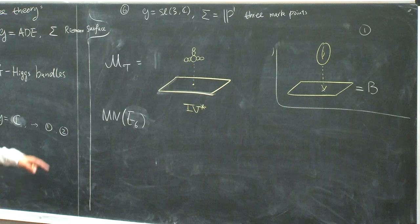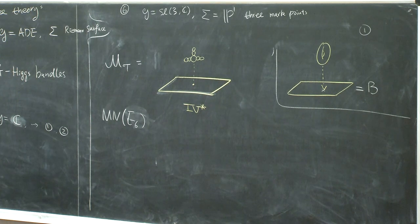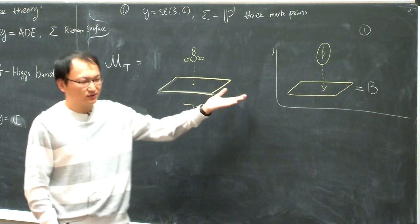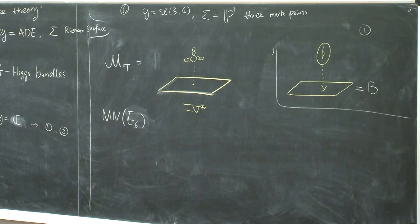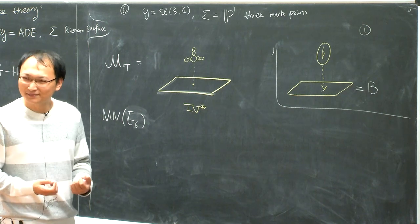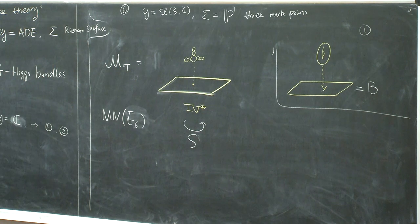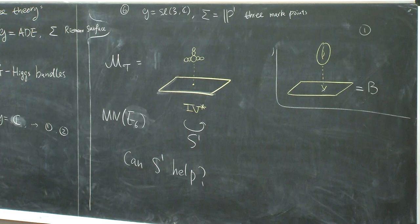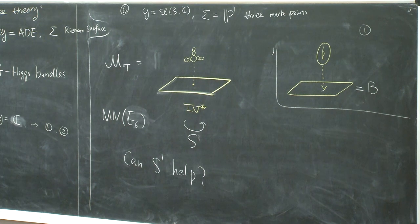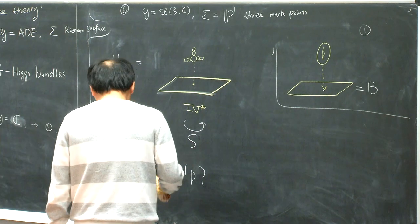But these kinds of moduli spaces look somewhat problematic because there are non-compact directions. If you pay attention to previous talks, you would say this is not a big problem as long as we have some symmetry so that we can do some equivariant localization. So now, for a superconformal theory, we know that there is an S^1 action, and you can ask whether this S^1 can help — whether you can use this S^1 to do some equivariant integral and get some finite answer. Well, it can help a little bit.